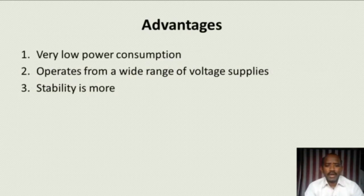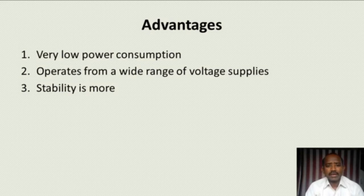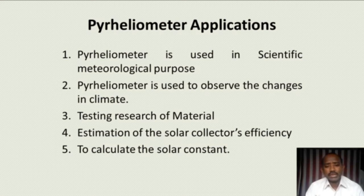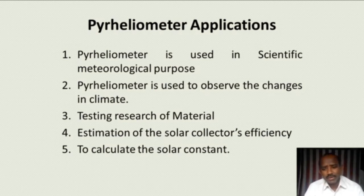The main advantages of the pyrheliometer are that it consumes very less power, it operates over a wide range of voltage supply, and its stability is more. There are many applications of the pyrheliometer: it is used for scientific meteorological purposes, to observe changes in climate, to calculate the solar constant, for testing research of materials, and for estimation of solar collector efficiency.